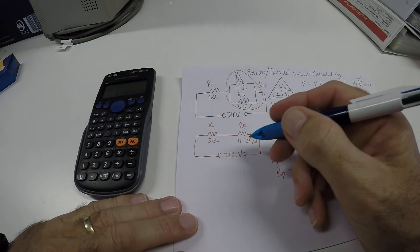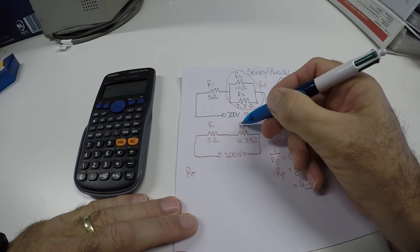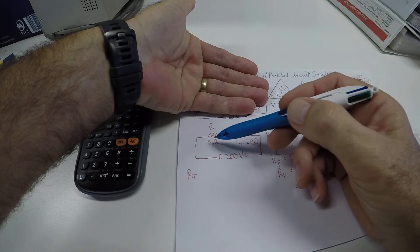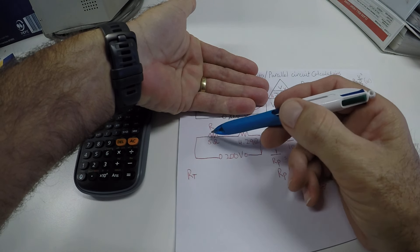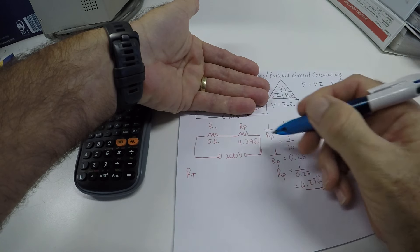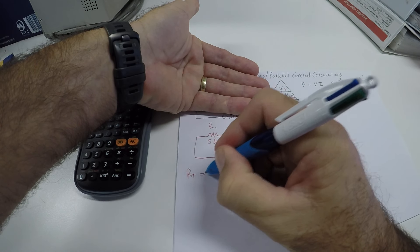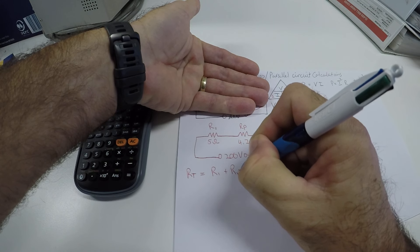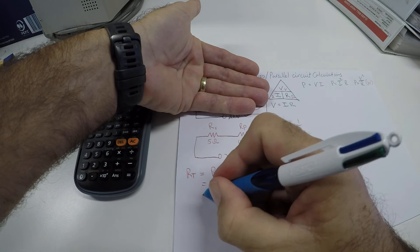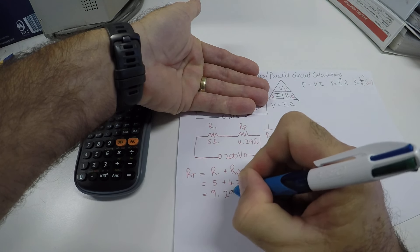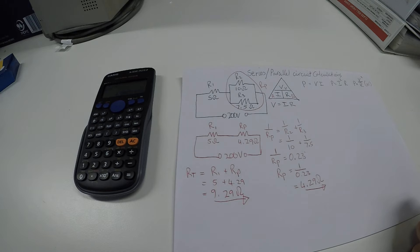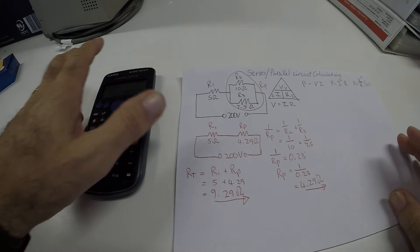Right. Now from here, I can now calculate the total. Because remember now, I am going to forget about this drawing and work with this one all the time. Now it is a series circuit. In a series circuit, the total resistance equals resistor 1 plus the other resistor. In this case it is RP. So I go R1 plus resistor parallel. So it is 5 plus 4.29 ohms. So that is 9.29 ohms. So there is my total resistance at the moment, 9.29 ohms.